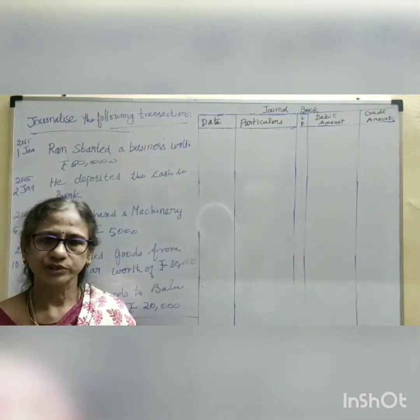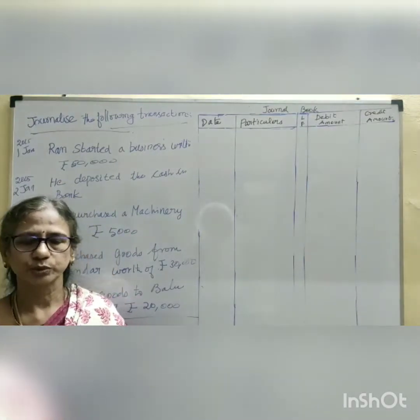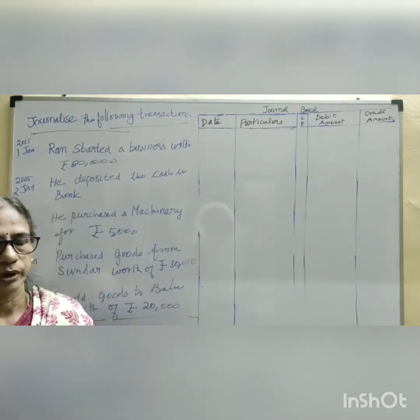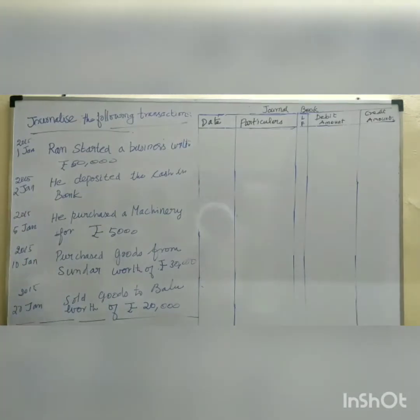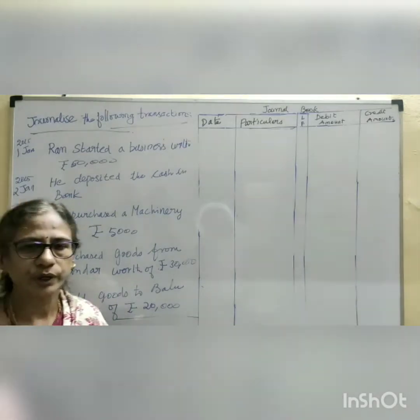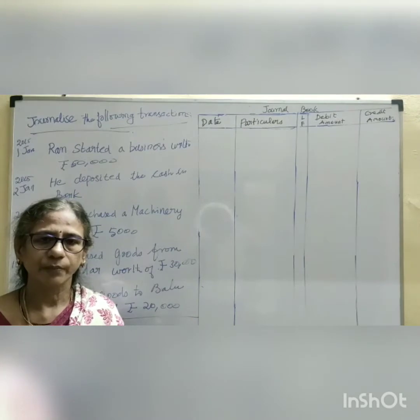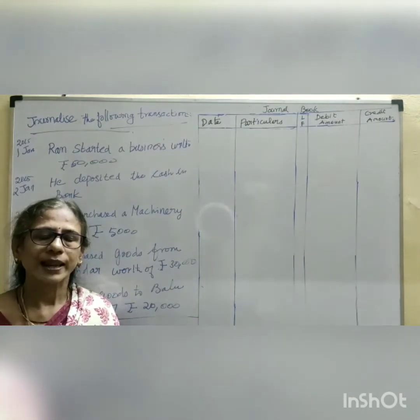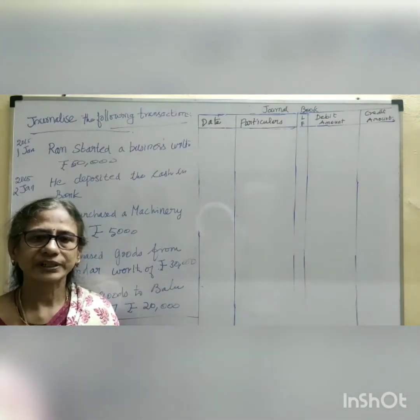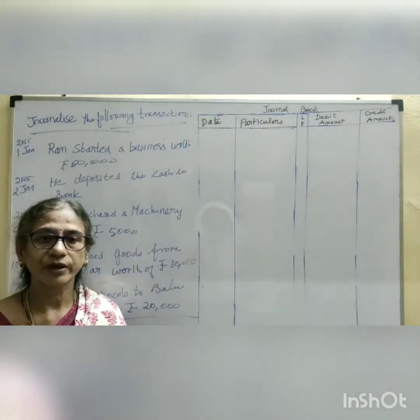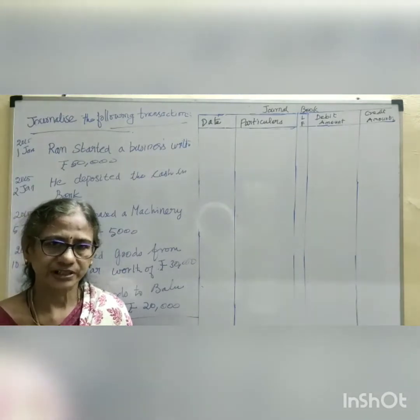Under the modern approach, it is very easy to classify accounts. There are five components in the modern accounting classification: number one, capital account; number two, liabilities account; number three, asset; number four, revenue; number five, expenses.